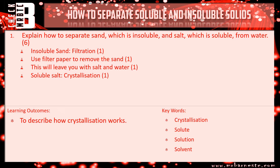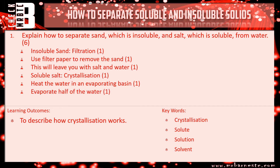How do you do that? Heat the water in an evaporating basin. How much do you heat? Get rid of about half of the water, and then once it's cooled and dried, you'll be left with your crystals of salt. Any six of those seven points gets you six marks out of six.